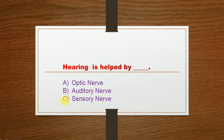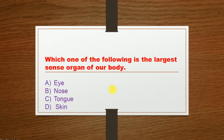The correct option is Option B: Auditory nerve. Next question: Which one of the following is the largest sense organ of our body? Option A: Eye, Option B: Nose, Option C: Tongue, Option D: Skin.